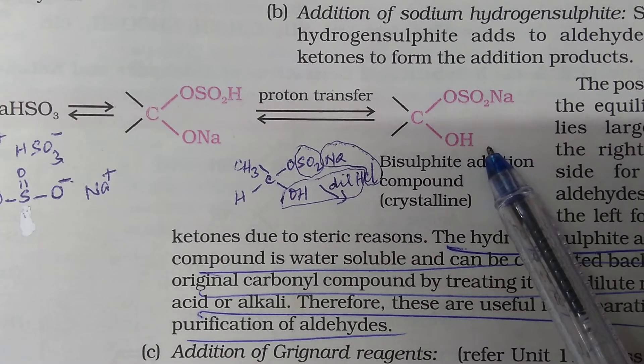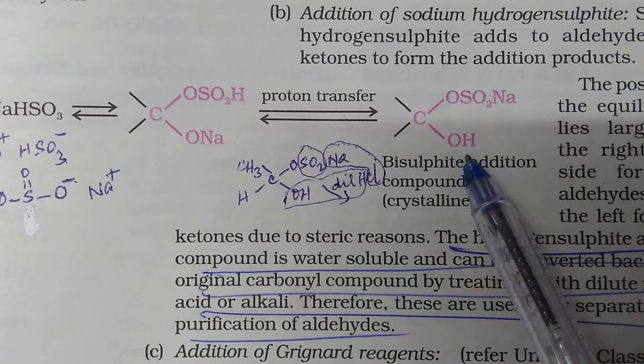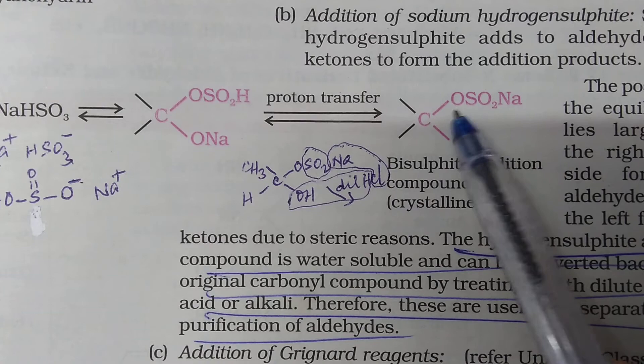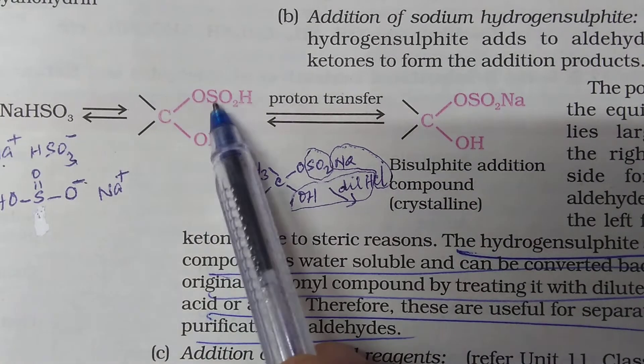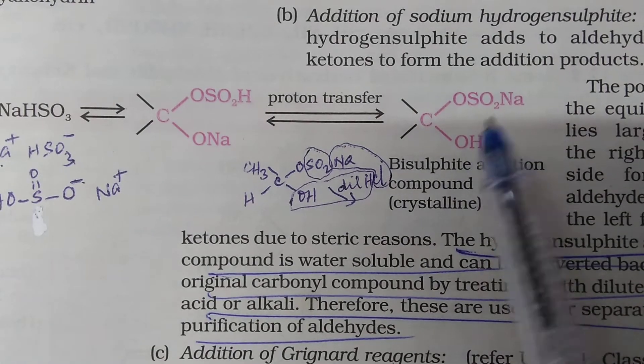What you get out of this? You get a bisulfite addition product. That is, C with OH because proton has come here and OSO2Na. OSO2H ki jake pe Na aagaya. So, you are getting the addition product.